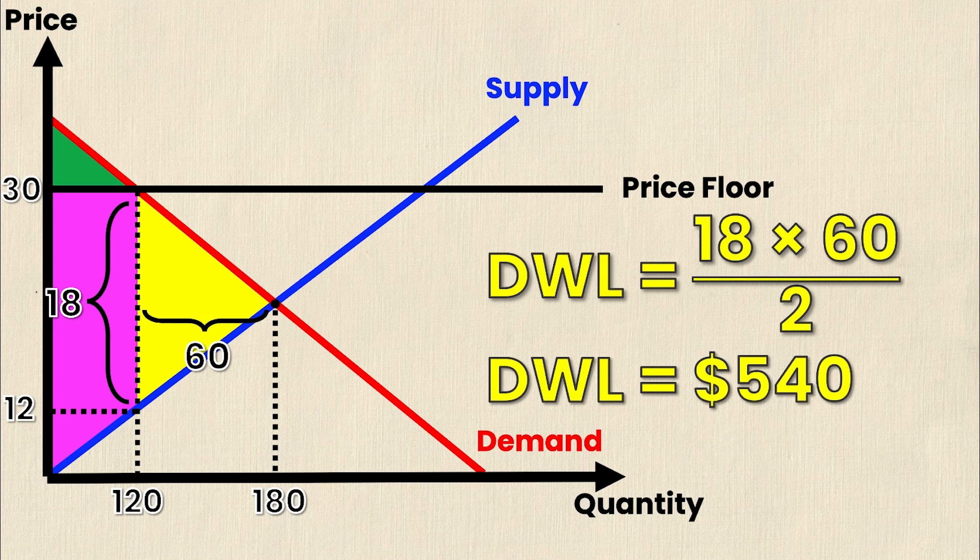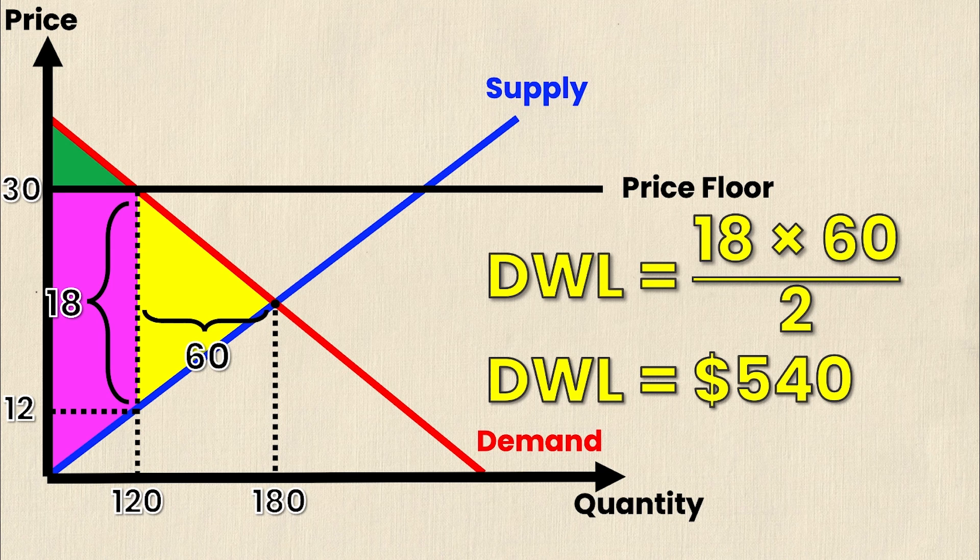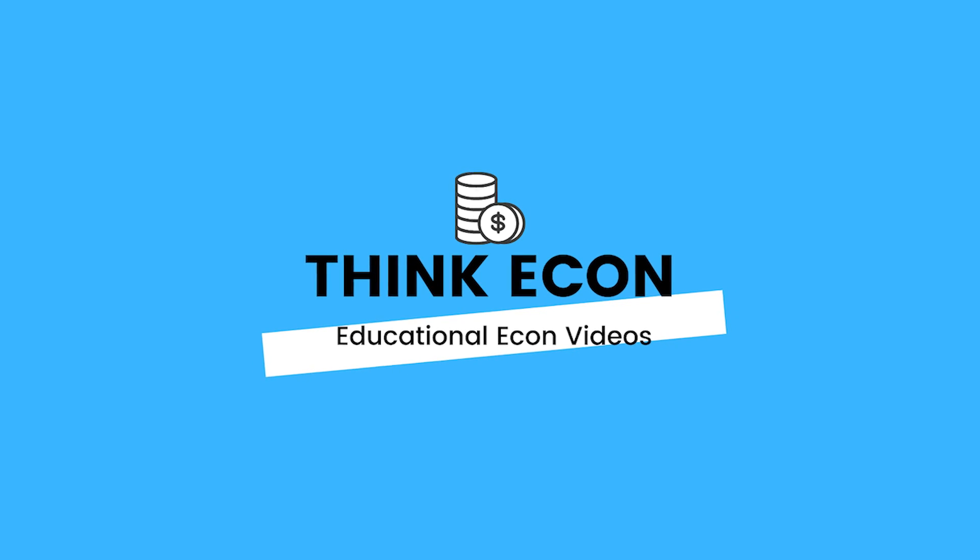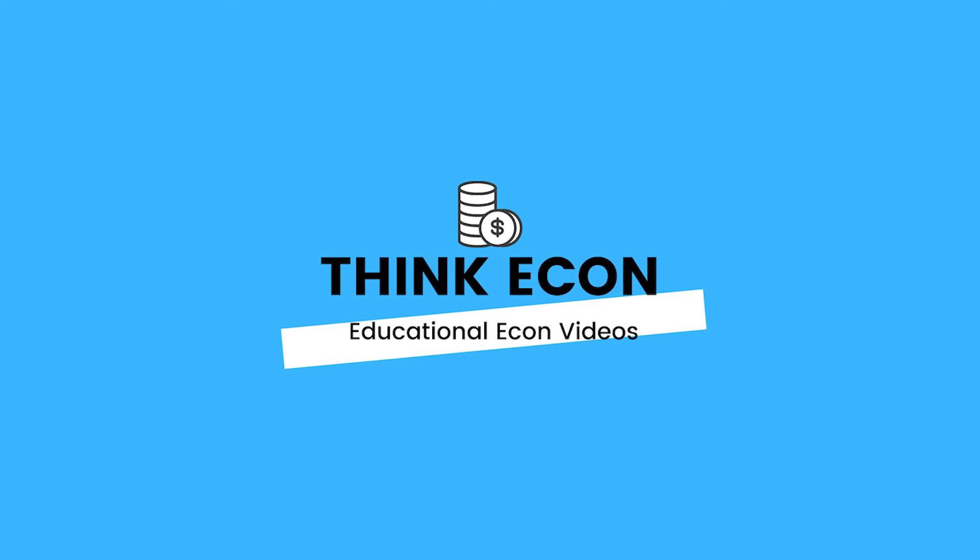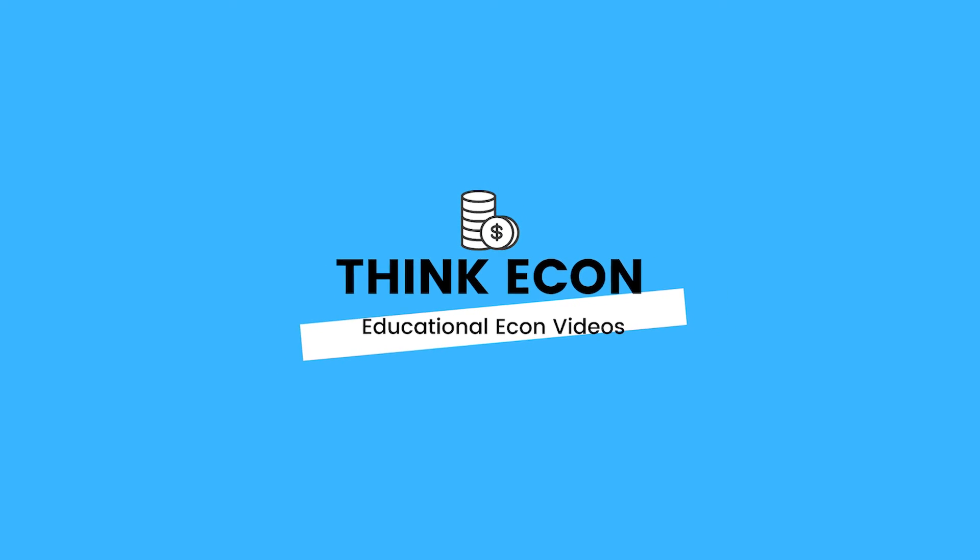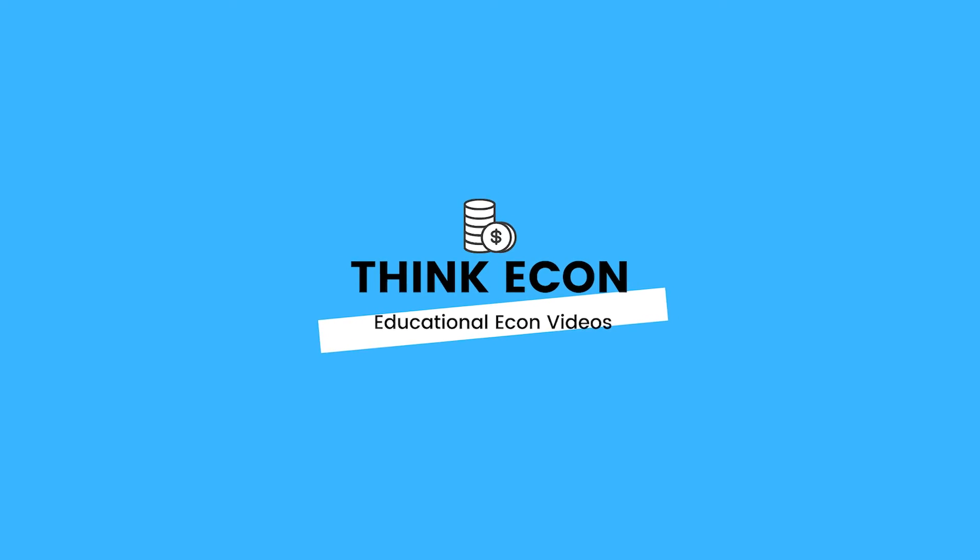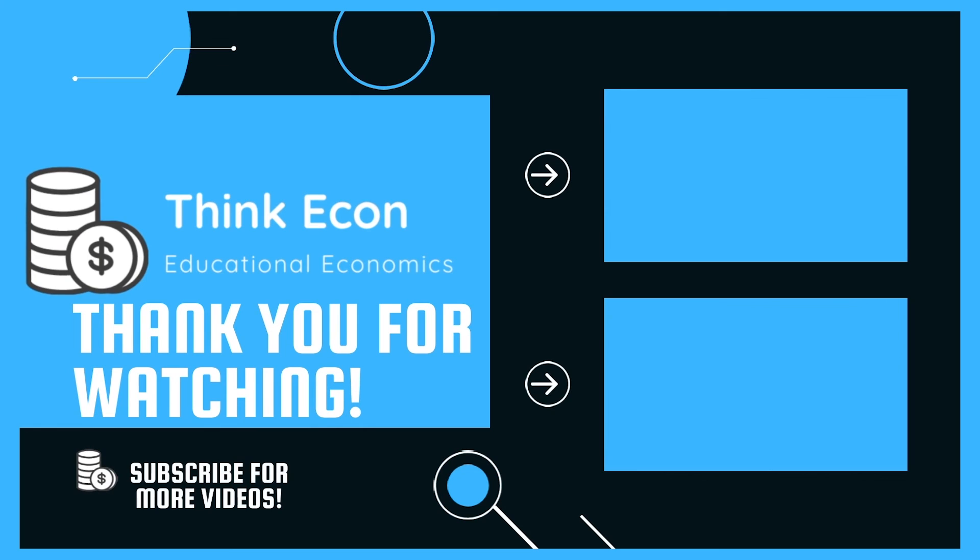Upon simplifying this we can get a value for deadweight loss of $540. Once again, total surplus and deadweight loss are typically in terms of dollars, so this is how you'd write it answering a question on a test. I hope that this video helped you conceptualize what deadweight loss is, but more importantly how to calculate it given the supply and demand equations and a change in price. If you found this video helpful let us know by liking the video, subscribing to the channel, and let us know in the comments section what sort of economic videos and homework questions you'd like to see us cover in the future. Thanks for watching and we'll catch you in the next.